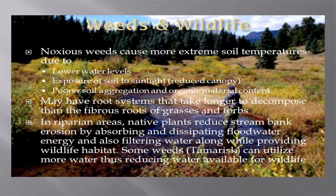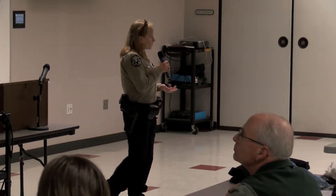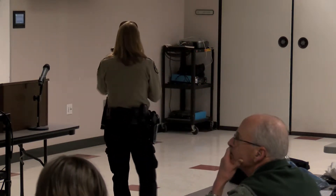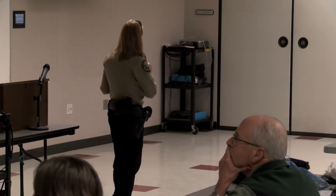Noxious weeds can cause more extreme soil temperatures due to lower water levels, because they're sucking up all the water so it can't get to the native plants. Exposure of soil to sunlight occurs because of the reduced canopy — again, we're taking away shelter. Weeds may also have root systems that take longer to decompose than fibrous roots of grasses and forbs. In riparian areas, native plants reduce stream bank erosion by absorbing and dissipating flood water.